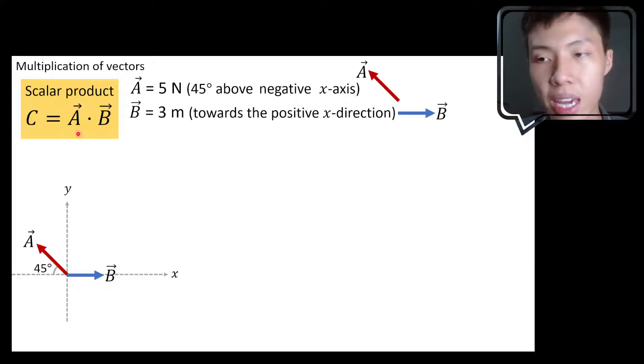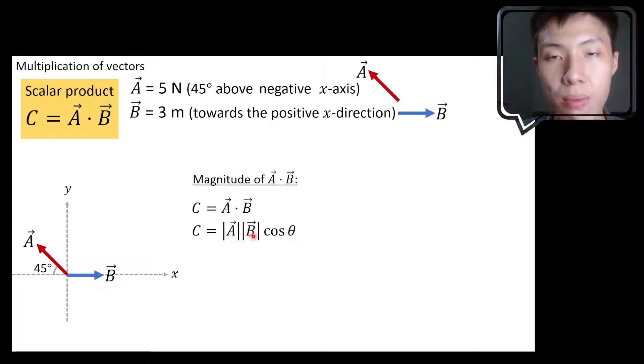Now, if I still want to find A dot B, what would be the answer? So the magnitude of A dot B, we can again calculate using AB cos θ. So this is magnitude of A, magnitude of B and cos θ.